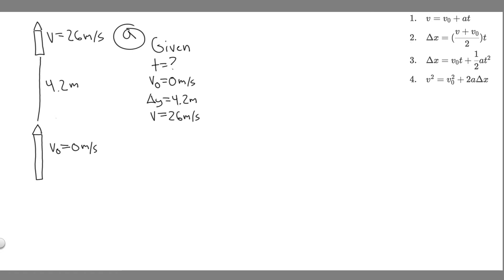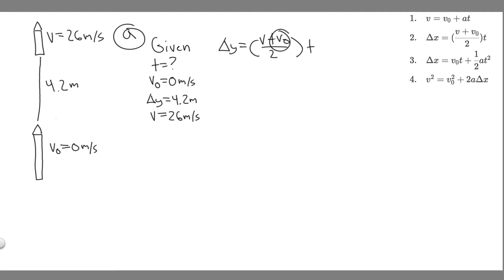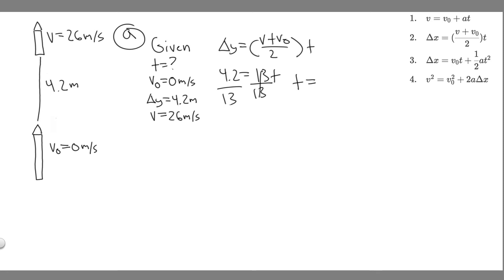We have V₀, delta Y, and V — three kinematic variables — so we can solve for T. The equation we're going to use is: delta Y equals (V + V₀) / 2 times T. Plugging in: 4.2 equals (26 + 0) / 2 times T, which simplifies to 4.2 equals 13 times T. Dividing both sides by 13 gives T equals 4.2 / 13, which equals 0.323 seconds. That's how much time it takes, and that's the answer to A.